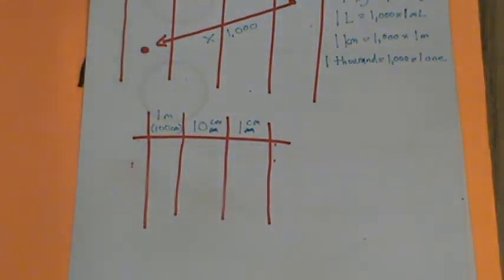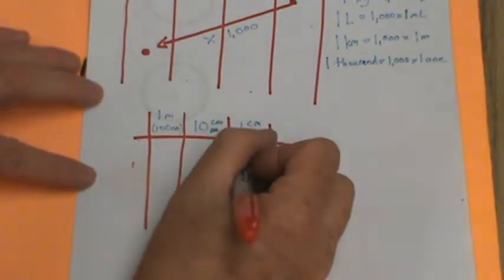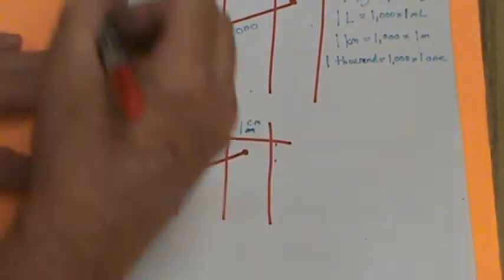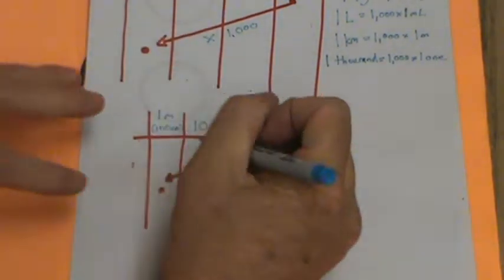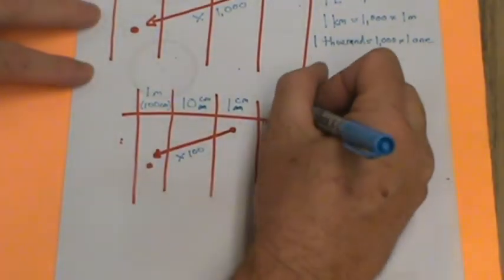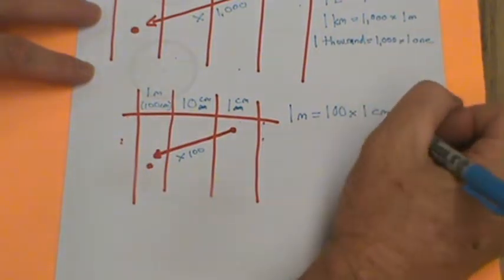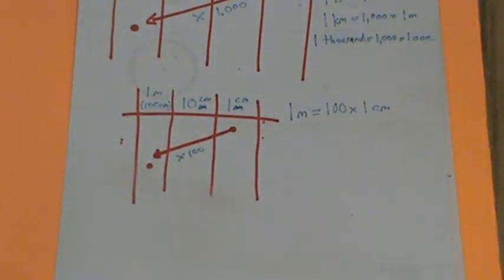Now, we do use centimeters and meters a lot. And it's not about 1,000. In this case, it's about 100. So if I had one centimeter and I wanted to get to one meter, I would multiply it by 100. And I would get one meter. So we could say in this case, one meter equals 100 times one centimeters. Okay. Excuse me. And then we'll turn the page.